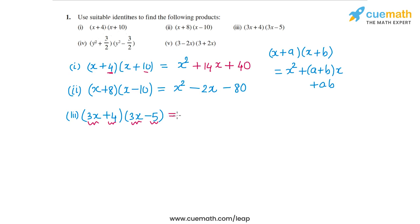So what will I have? I will have x², which is (3x)² in this case. So 9x², then we have a plus b. So 4 plus -5, that's -1, a plus b times x. So times 3x. And then ab. So 4 into -5 is -20. So this is the product in the third part.